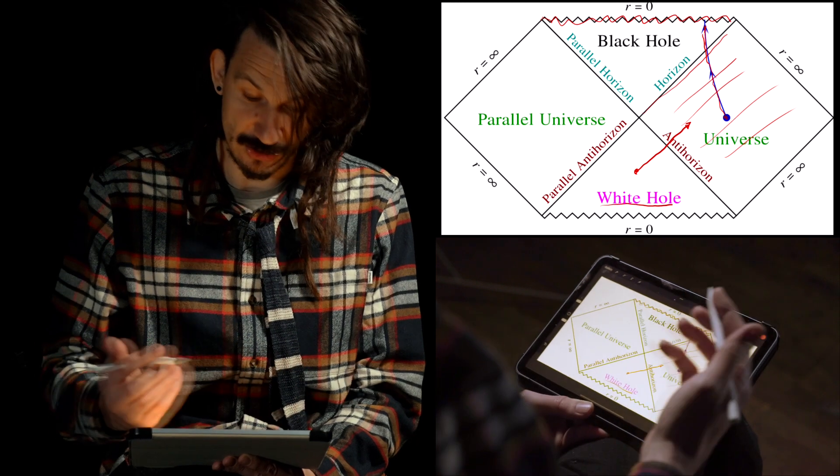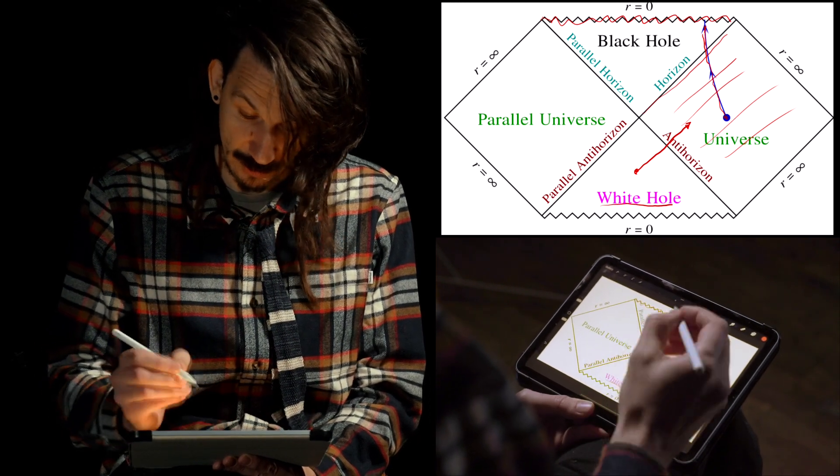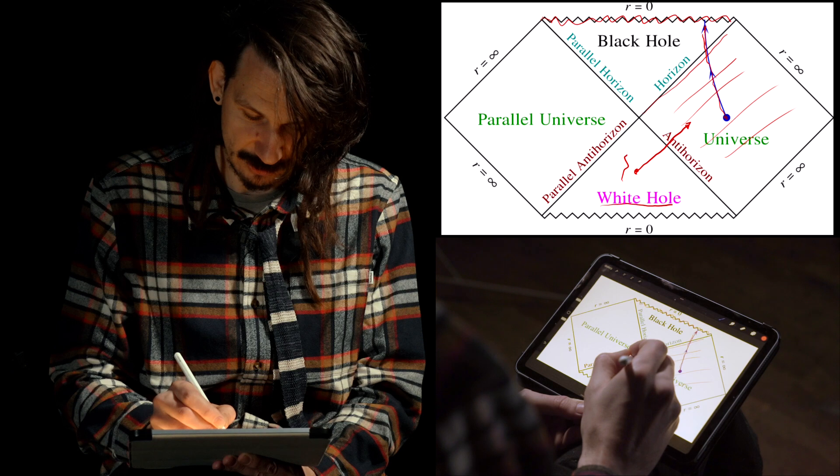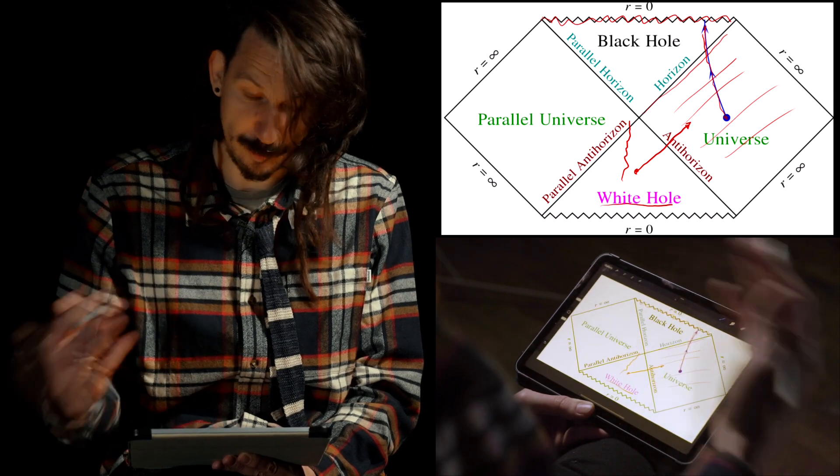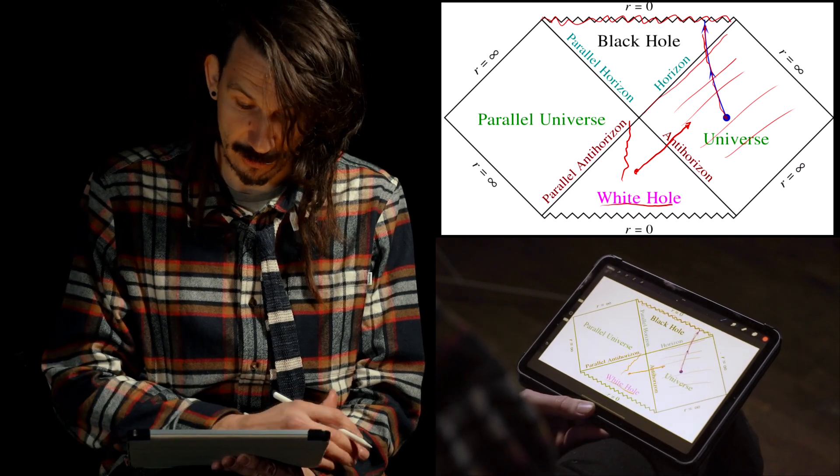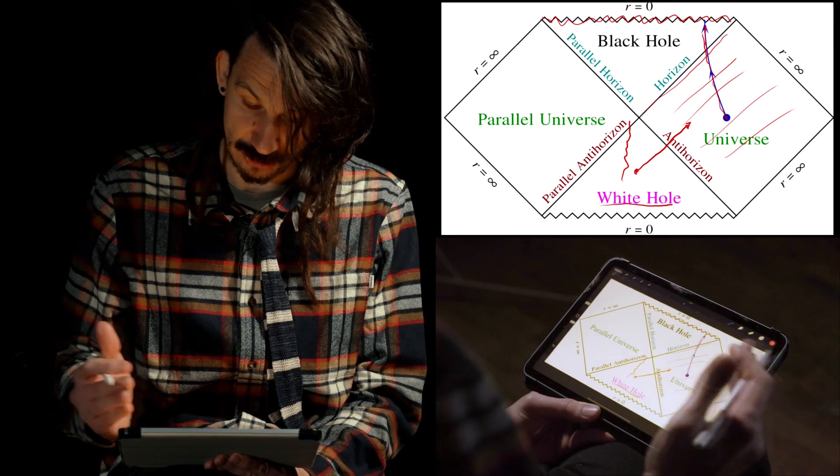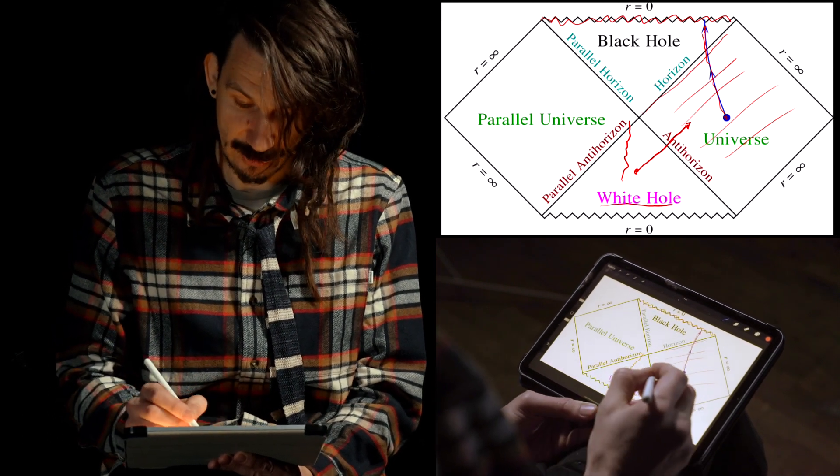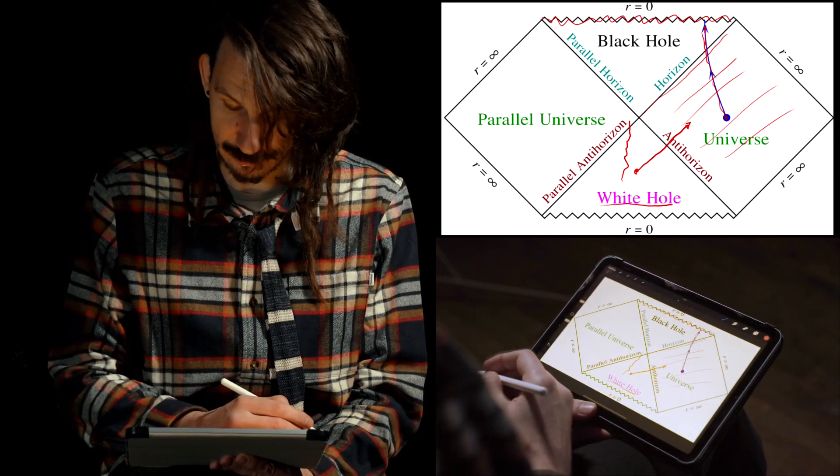Anything that is in the white hole has to move in a specific way. It will be expelled out of the white hole as soon as it crosses one of these parallel horizons or anti-horizons.